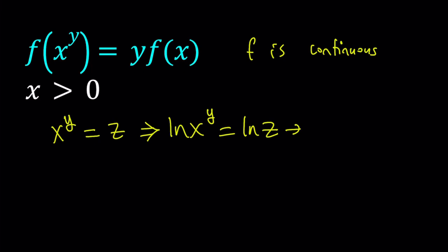From here we can do the following using the power property. We can move the y to the front and write this as y ln x equals ln z. This is nice because it allows you to isolate y and write it in terms of x and z. So let's go ahead and do that. Isolate y and write it as ln z over ln x.